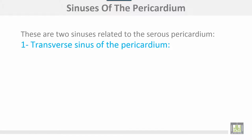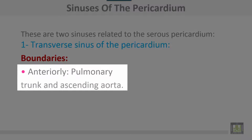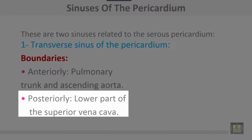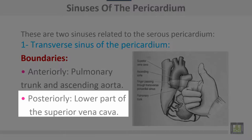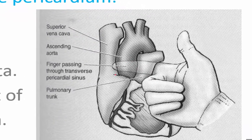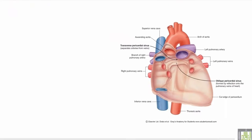Sinuses of the pericardium. There are two sinuses related to the serous pericardium. The transverse sinus of the pericardium is bounded anteriorly by the pulmonary trunk and ascending aorta, and posteriorly by the lower part of the superior vena cava. This is the transverse sinus: anteriorly the ascending aorta and pulmonary trunk, and posteriorly the lower part of the superior vena cava.